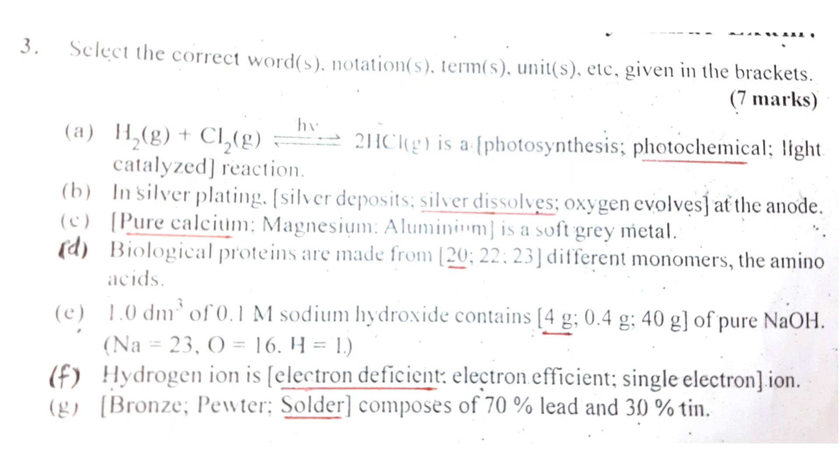Number C: Pure calcium, magnesium, and aluminum are soft-grade metals.